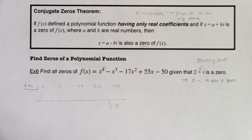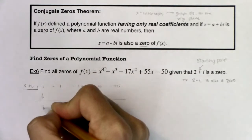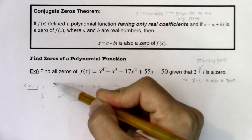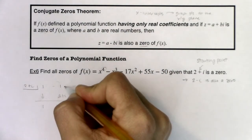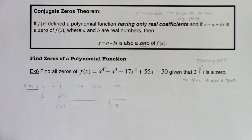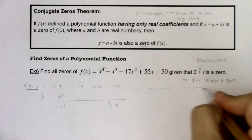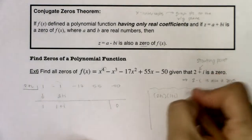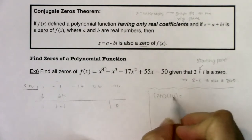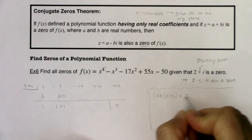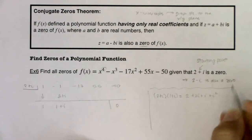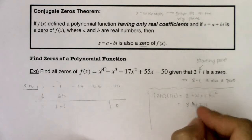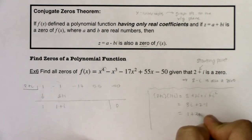Synthetic division works the same way, but it is trickier with a complex zero — and I should get zero, since 2 plus i was a zero. The one comes down. One times 2 plus i is 2 plus i. Adding those terms: negative one plus 2 plus i gives one plus i. Next I need to multiply 2 plus i times 1 plus i. Let me work that on the side: FOILing gives 2 plus 2i plus i plus i squared. Since i squared equals negative one, I get 1 plus 3i.